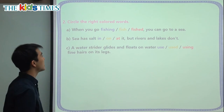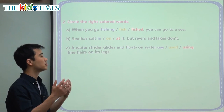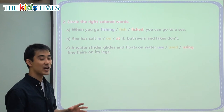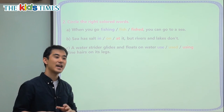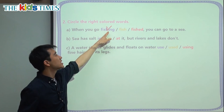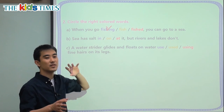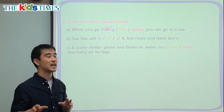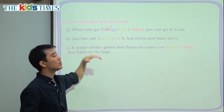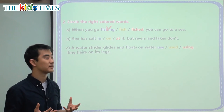We have three key grammar questions. When you go blank, you can go to the sea. We have something called a gerund. A gerund is when we take a verb and make it into a noun. So 'fishing' here is not a verb — 낚시하러 간다. For example: we say 'when you go swimming,' not 'when you go swim.' 'When you go running,' not 'when you go run.' 'When you go playing,' not 'when you go play.'